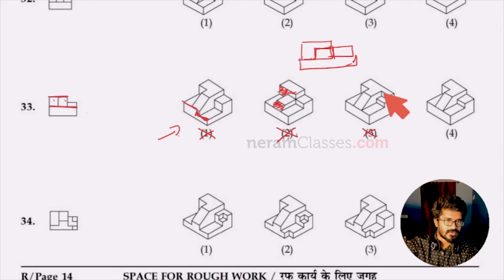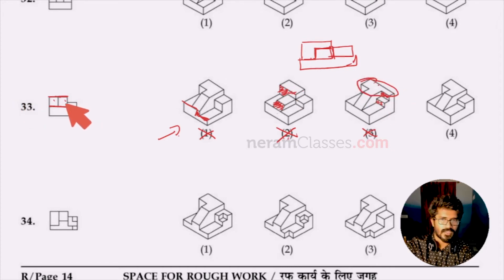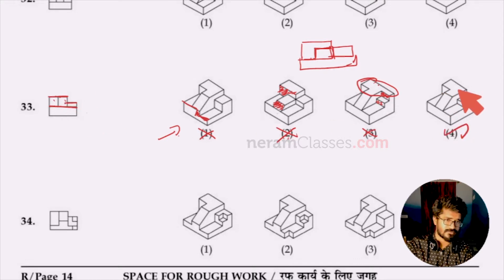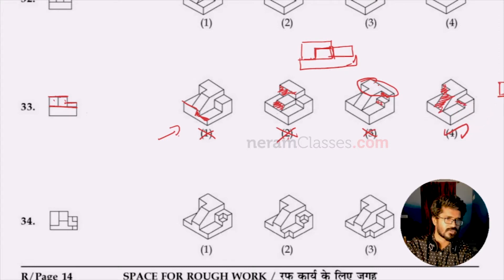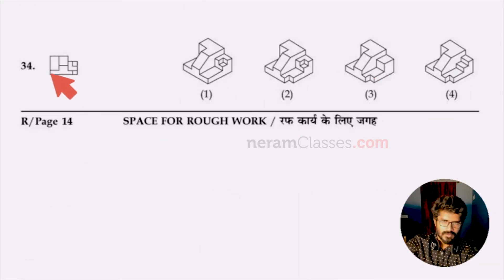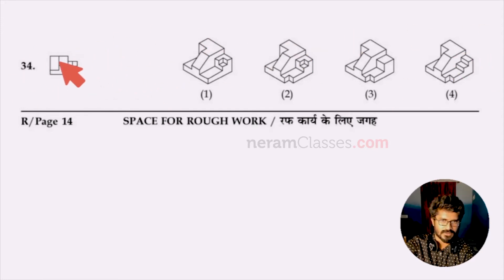Option three is also wrong because two surfaces are aligned on top but in the given shape one is below the level. Option four is the right answer: first shape, next shape, then a smaller shape, and the base — matching with the question. So four is the right answer. For question 34, we need to find which 3D solid matches this elevation.